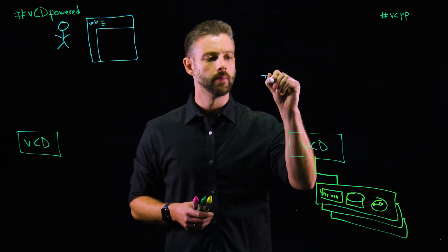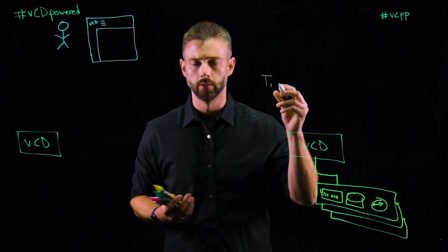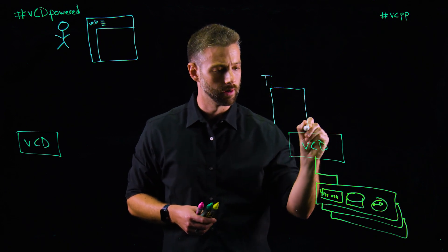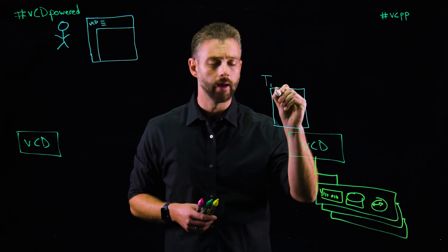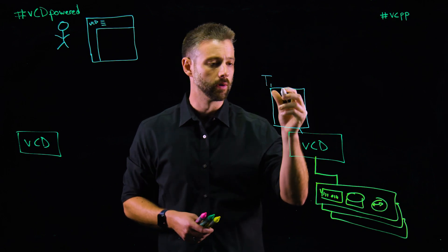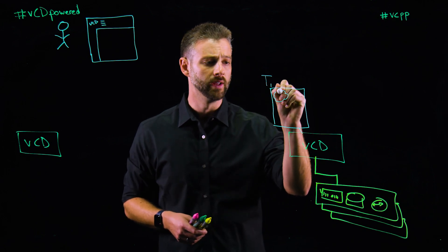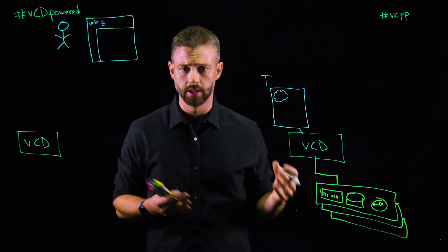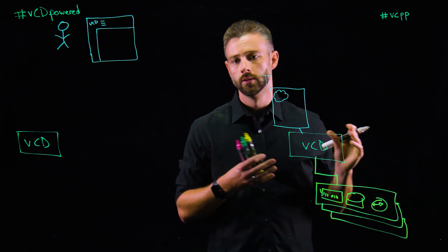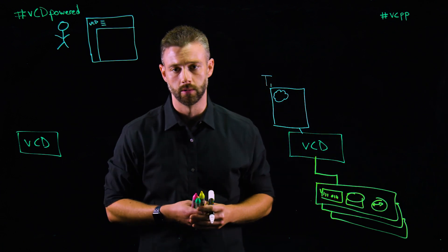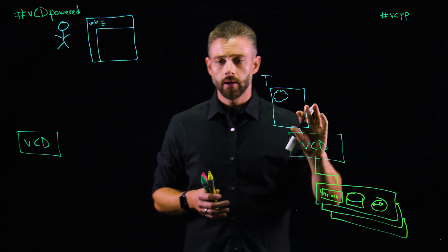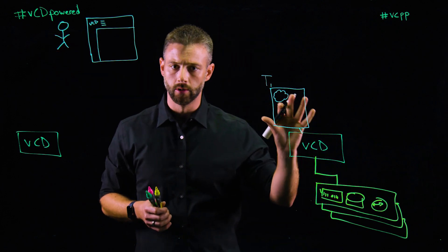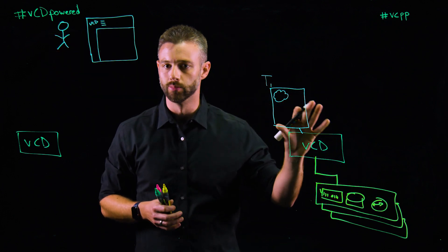In my example here, we have T1, which is tenant one. We create our organization context, and then inside of the organization we create OVDCs, or organization VDCs, which is a pool of CPU, memory, storage, and network resources. From here, the end user can log in securely through a UI or API and consume those resources.